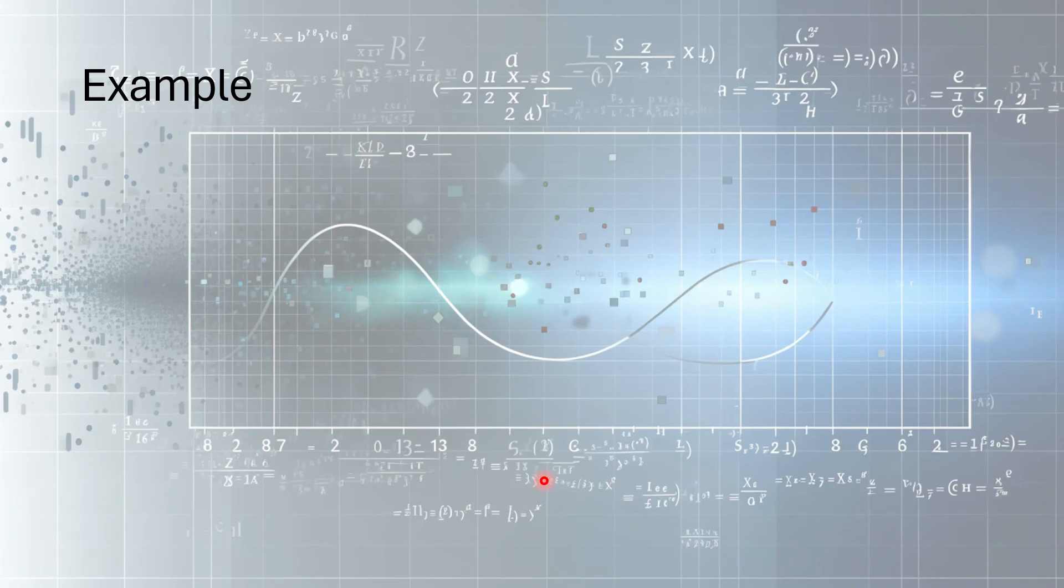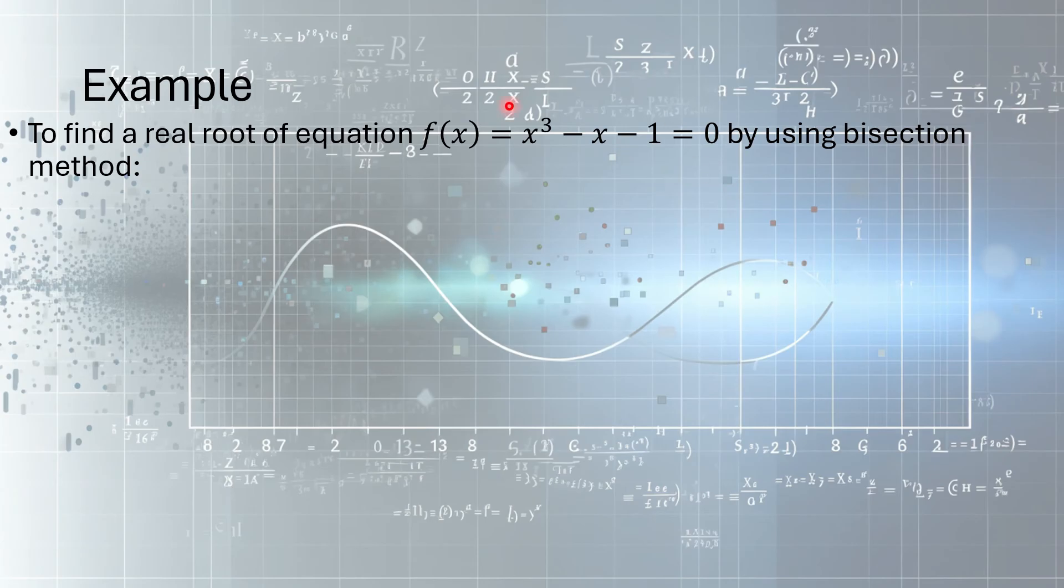I will do that through the calculator as well. So let's suppose we want to solve this equation: x³ - x - 1 = 0. This will be our f(x). So you see, in this case, f(1) = 1³ - 1 - 1 = -1, that is negative. And if you put x equal to 2, that will be 2³ - 2 - 1, which gives you 5.